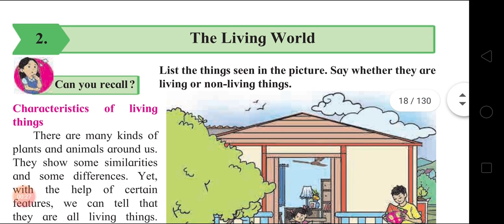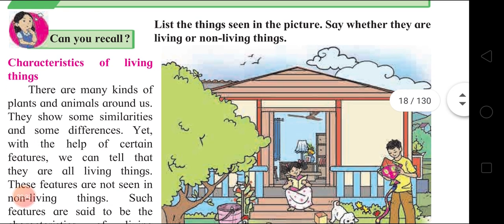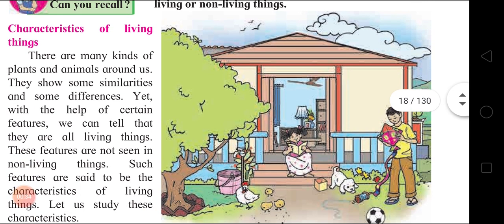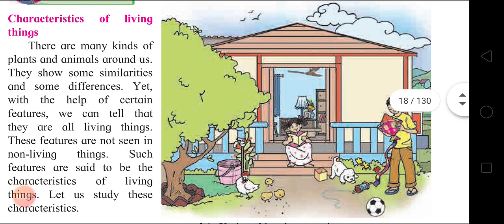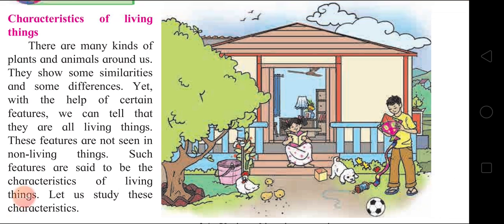Can you recall? List the things seen in the pictures. Say whether they are living things or non-living things. House - non-living thing. Trees - living things. Chicken/hen - living things. Puppy - living thing. Boy - living thing. Kite - non-living thing. So you know living things and non-living things. You all must have learnt this from 2nd and 1st standard.